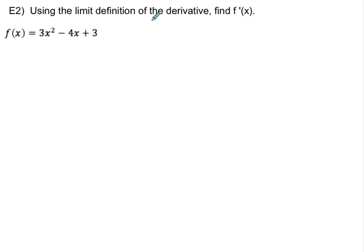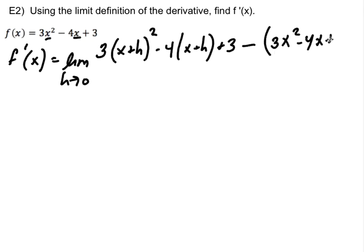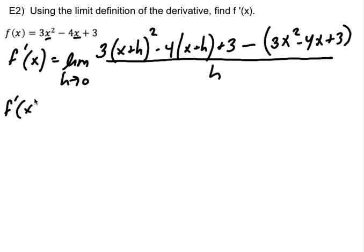Now let's do one that's a bit harder with squared terms: f(x) = 3x² - 4x + 3. My f prime of x is the limit as h approaches 0. When I write f of x plus h, anywhere I see an x I replace it with x plus h, giving 3 times x plus h quantity squared minus 4, plus 3, minus the entire original function, all over h.